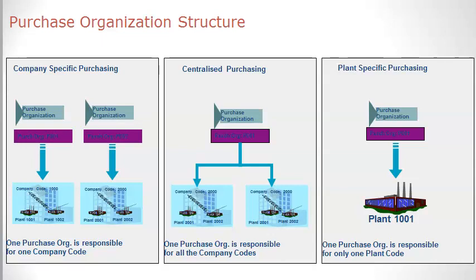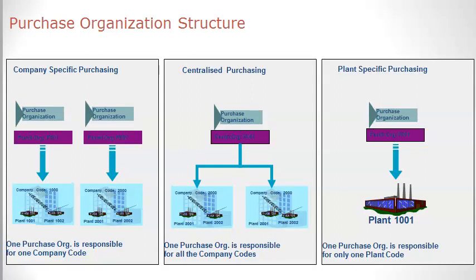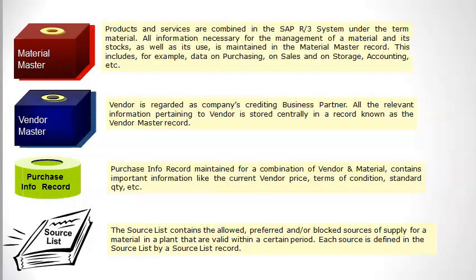When we talk about purchasing: in company-specific purchasing, each company code has its own purchasing organization responsible for procurement. In centralized purchasing, there is only one purchasing organization responsible for procuring goods and services for all plants — this gives better bargaining power. In plant-specific purchasing, there is a purchasing organization responsible for procuring for specific plants, such as stationary items required by individual plants.